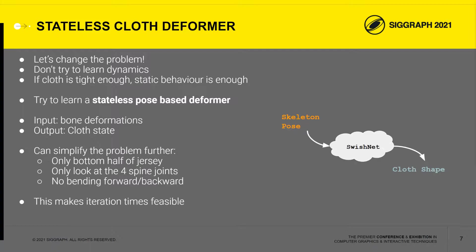One of the main problems with Holden-19 is the fact that it has to predict dynamics. This requires a huge amount of training data and raises the possibility of numerical explosions and other feedback issues. However, football jerseys are quite tight, and tight clothing should exhibit fewer dynamics. So we thought it was worth investigating a quasi-static cloth system. By removing dynamics, we significantly simplify the problem. Our system takes in the rotations of a few selected joints and passes them to a neural network, which tells us what the cloth shape should be given that pose. In the shipped models, we used only the four joints of the character's spine to predict the cloth motion, and we also mask out any forward and backward bending motion to further reduce the space that has to be considered.